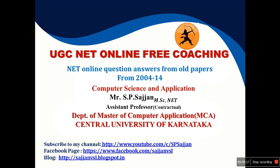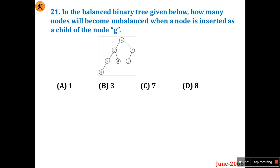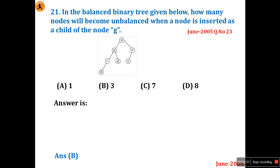Today I will cover question number 21 to 30. Look at question number 21 in June 2006: in a balanced binary tree given below, how many nodes will become unbalanced when a node is inserted as a child of node G? This means how many nodes are required to balance this tree. Those who have seen all my previous videos can answer this easily, because the same question was repeated — I think in June 2005, question number 23.